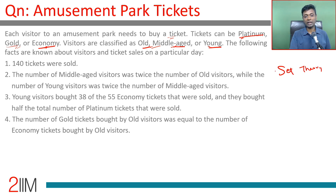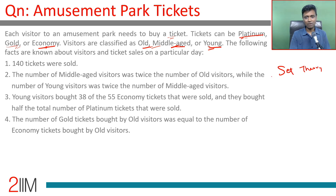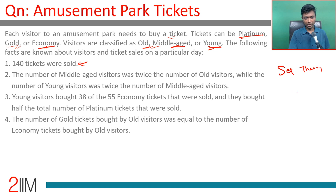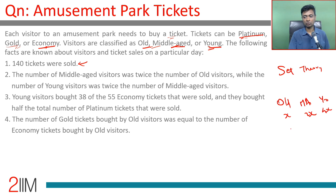Unlike preferences (e.g., liking cars, buses, or taxis) where overlap can exist, these ticket and age categories have no overlap. We need to draw out the template early. 140 tickets were sold. Middle-aged visitors were twice the number of old visitors, and young visitors were twice the number of middle-aged. So if old = x, middle-aged = 2x, young = 4x. Then 7x = 140, so x = 20.